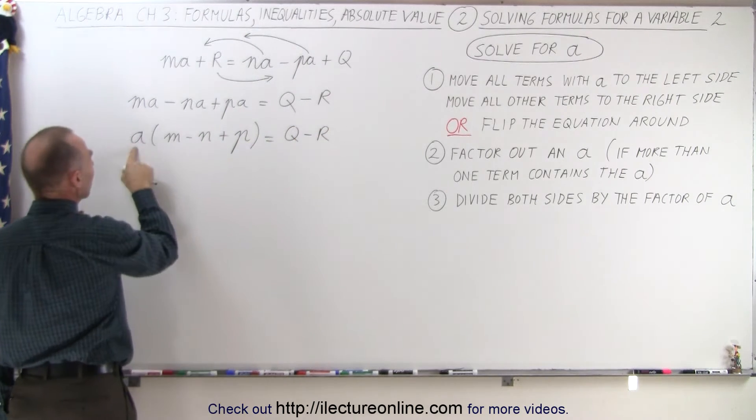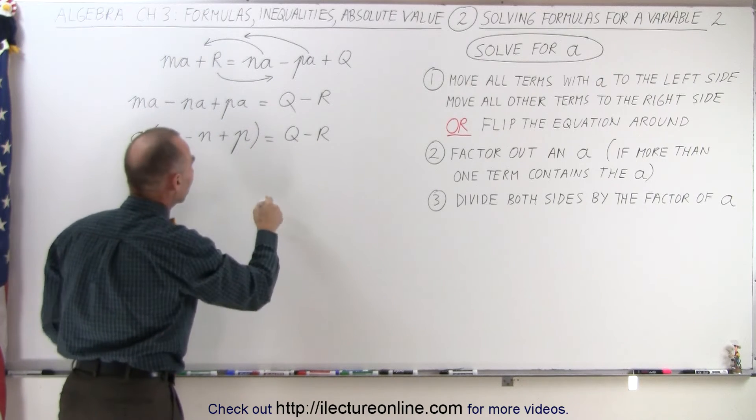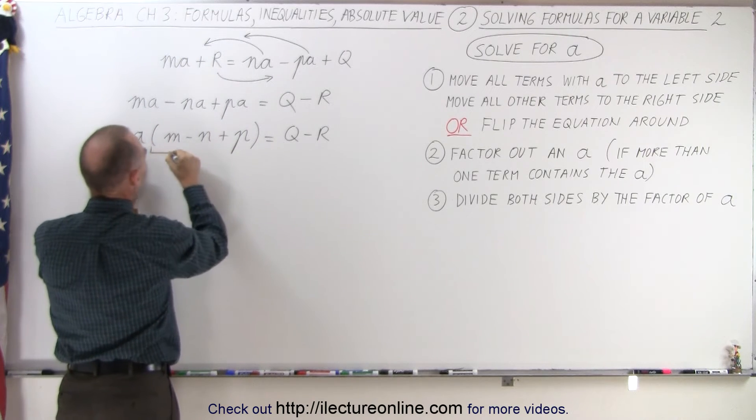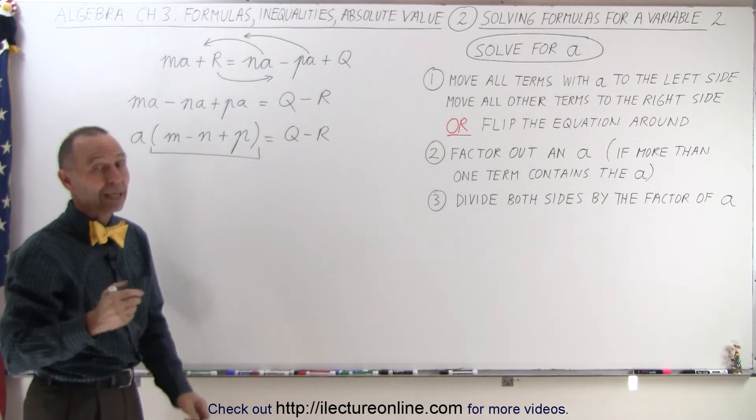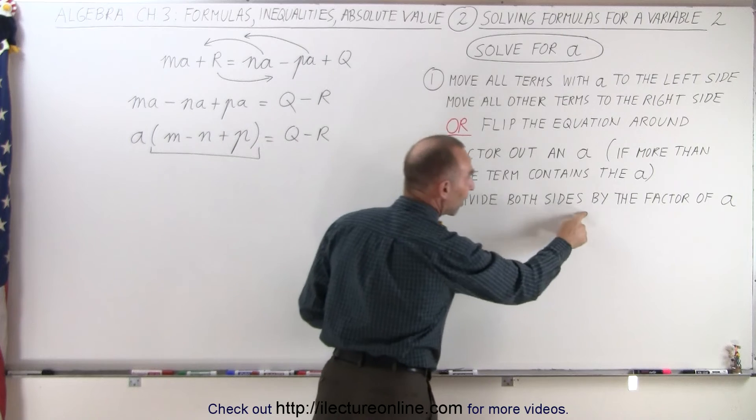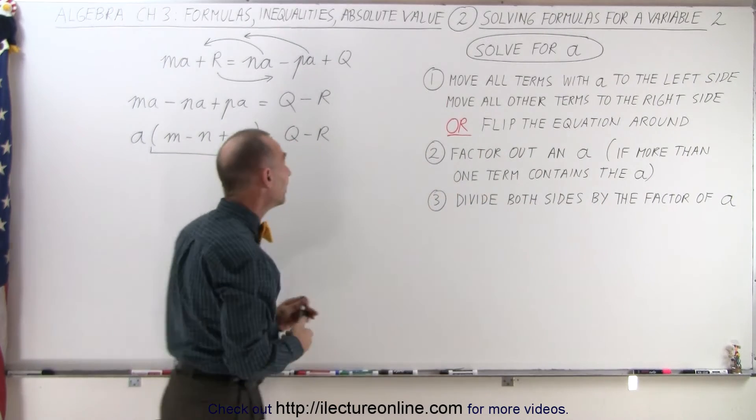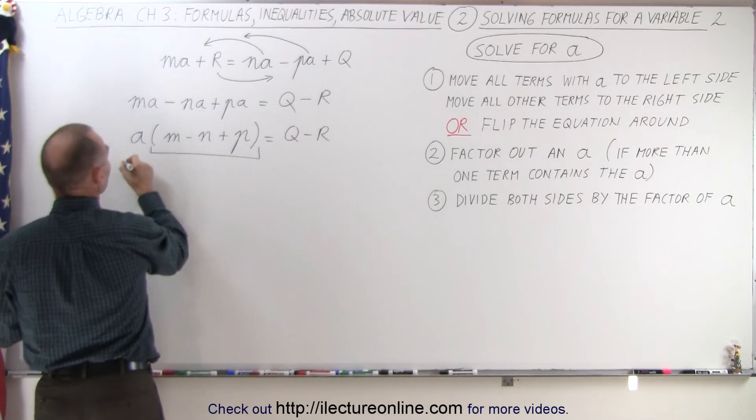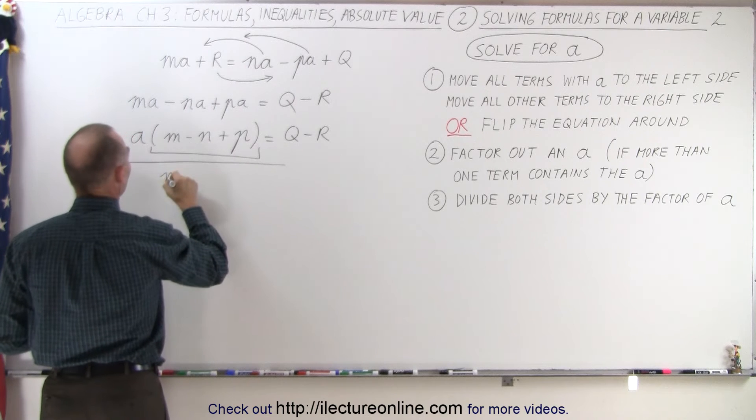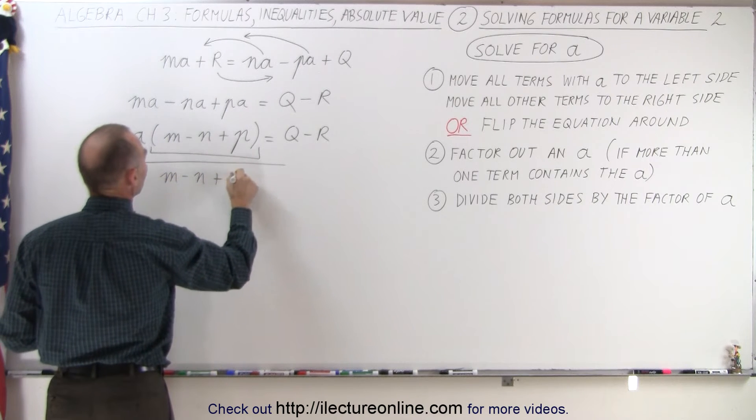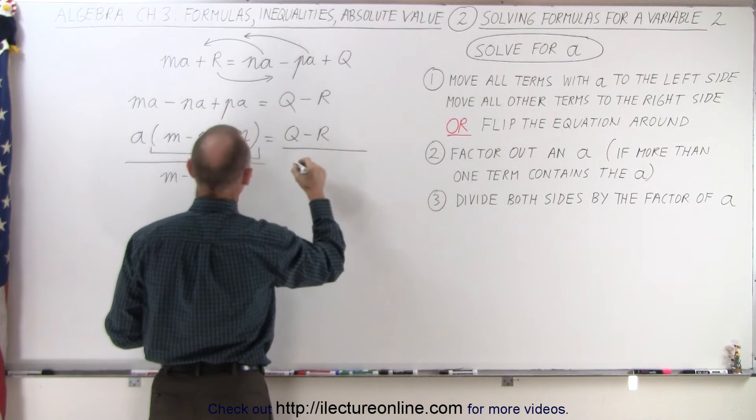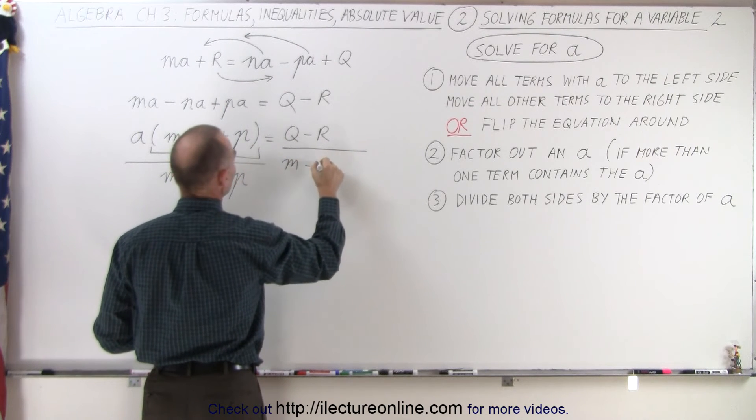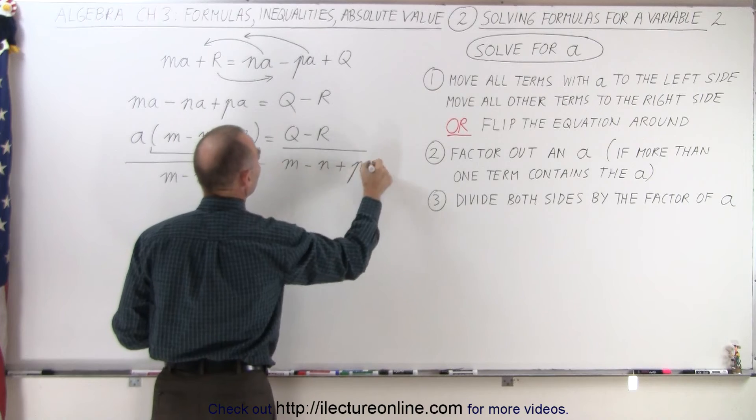Now it doesn't matter if the A is in front or the A is in the back, we realize that this term right here is the factor of A. So now when we get to the next step, it tells us to divide both sides by the factor of A, which means we're going to divide the left side by M minus N plus P. And of course, when we do that, we have to divide the right side by M minus N plus P as well.